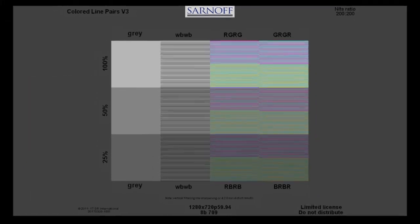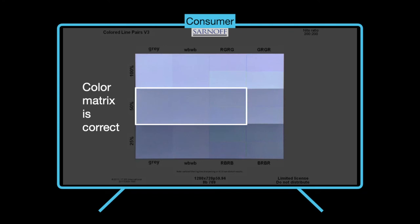On this example of a consumer TV, only the middle 50% row could be made to match. The color matrix was correct, and all three panels match in row 2.